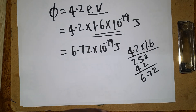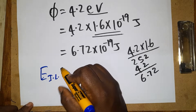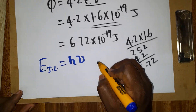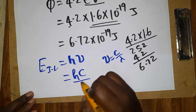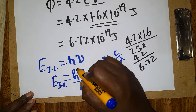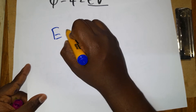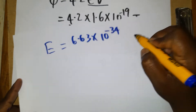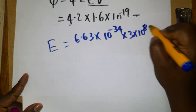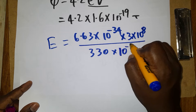We need to check whether the incident light energy exceeds the work function. The energy of incident light is E = hf = hc/λ, using Planck's constant h = 6.63 × 10⁻³⁴, velocity of light c = 3 × 10⁸ m/s, and wavelength λ = 330 nanometers = 330 × 10⁻⁹ meters.